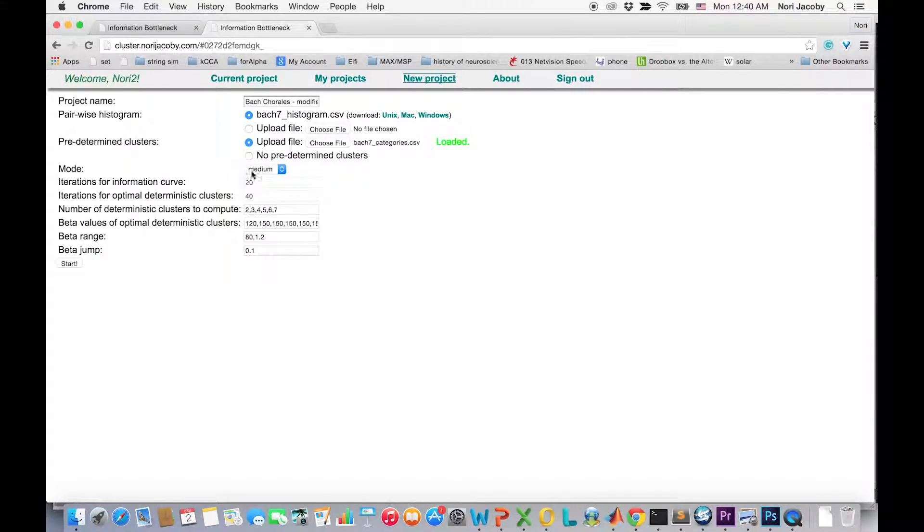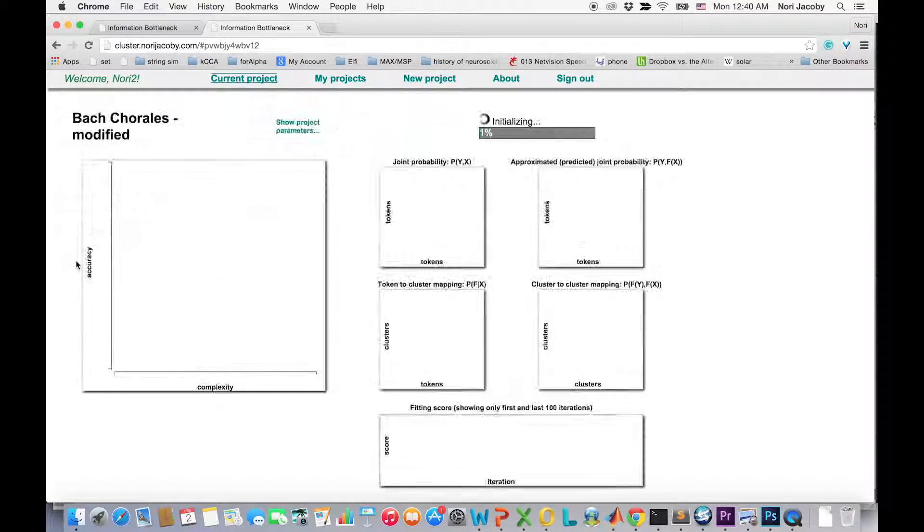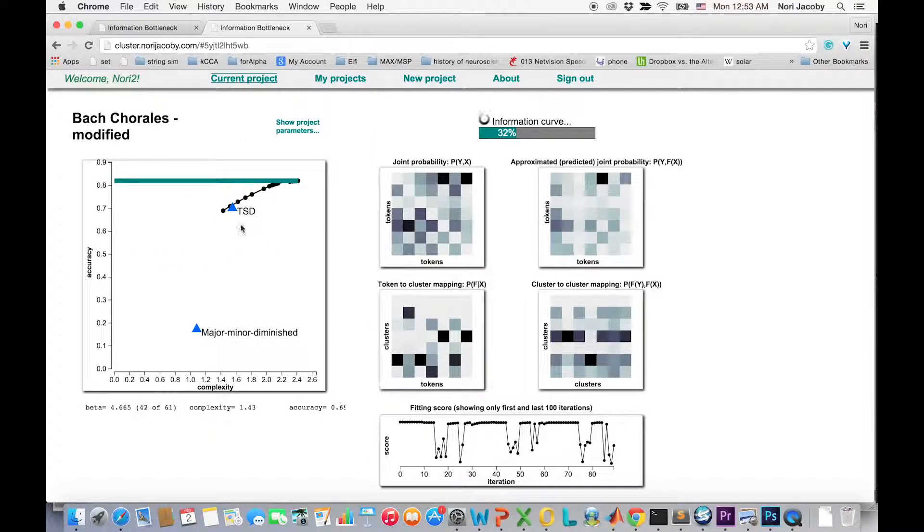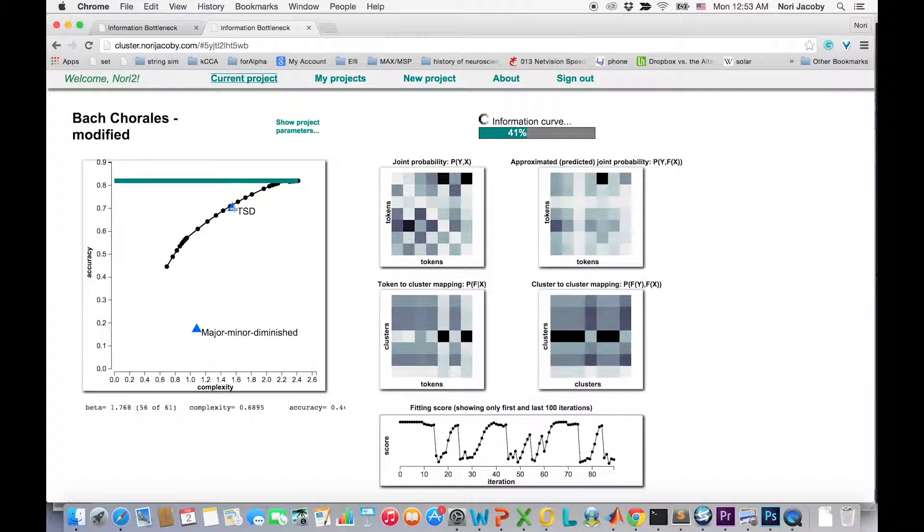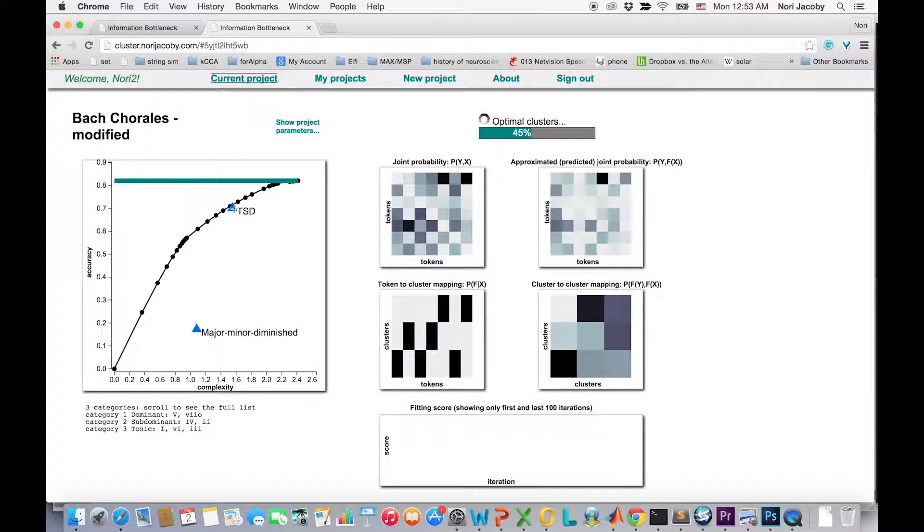We select it and hit start. We already know that tonic, subdominant, and dominant need to be optimal. Indeed, it is positioned just on the optimal curve, which means that for a given complexity, it gives us the best possible accuracy. But also compatible with music intuition,